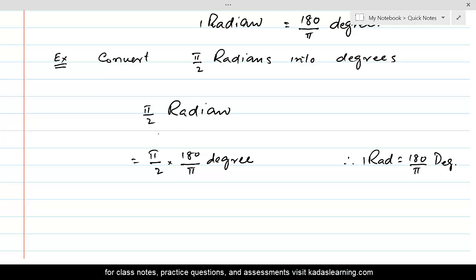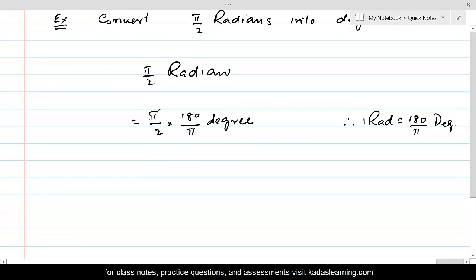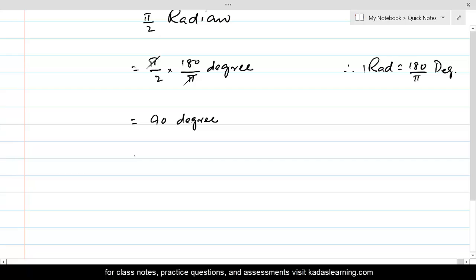You can see that we wanted to convert pi by two radians into degrees, so we multiplied by 180 over pi degrees. Pi cancels, and this equals 180 over 2, which is equal to 90 degrees. Whether you write degrees this way or use the degree symbol, that's one and the same thing.